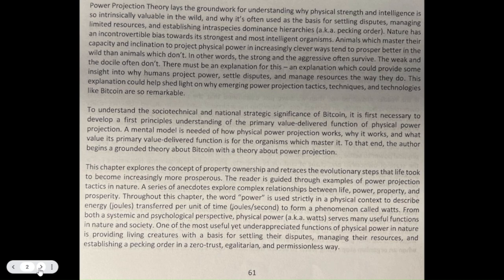To that end, the author begins a grounded theory about Bitcoin with a theory about power projection. This chapter explores the concept of property ownership and retraces the evolutionary steps that life took to become increasingly more prosperous. The reader is guided through examples of power projection tactics in nature. A series of anecdotes explore complex relationships between life, power, property, and prosperity. Throughout this chapter, the word power is used strictly in a physical context to describe energy — joules transferred per unit of time (joules over second) — to form a phenomenon called watts.